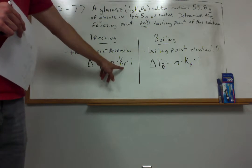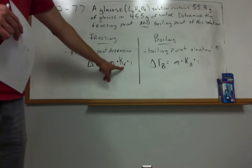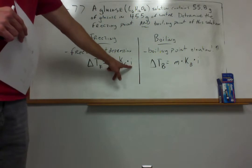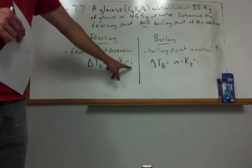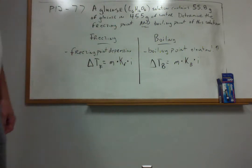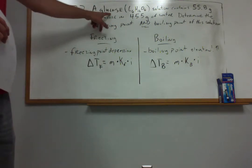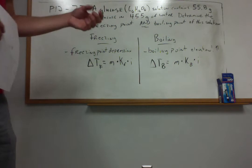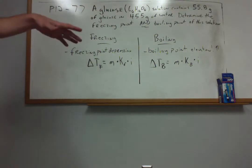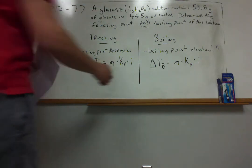This is going to be our freezing point depression constant. It's a property of the solvent itself. Water's got its own value, benzene's got its own value, acetone's got its own value. Every solvent has its own KF value. And I is our Van't Hoff factor. Remember that theoretical value describes how many particles you get per one formula unit when our given molecule or solute dissolves. In this particular case, we've got glucose, which is our sugar. It's a molecular compound. It's not an ionic solid, so its Van't Hoff factor is just going to be equal to one.